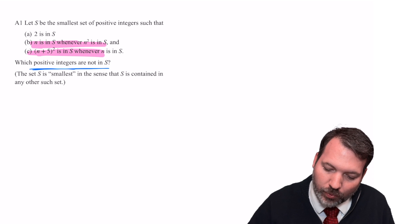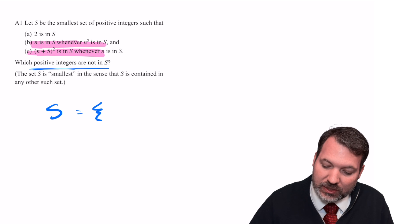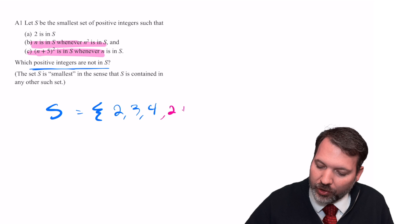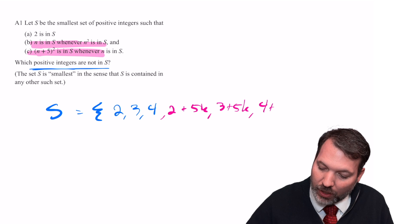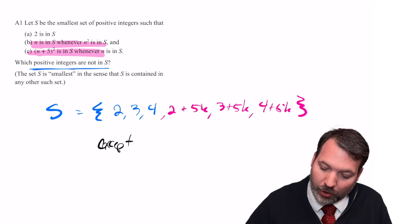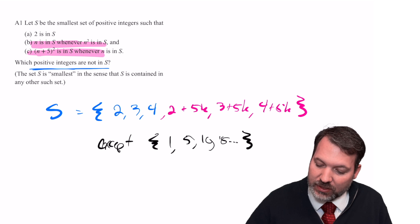So, at this point, I think we can go ahead and answer the question. S is going to have to be the set of numbers 2, 3, 4, and then all the numbers, some multiple of 5 greater than 2, 3, and 4. That is, it's going to contain all the positive integers except for 1, 5, 10, 15, etc.